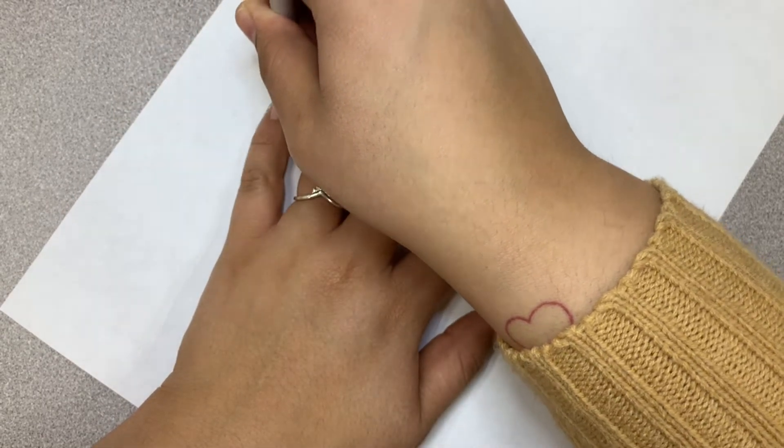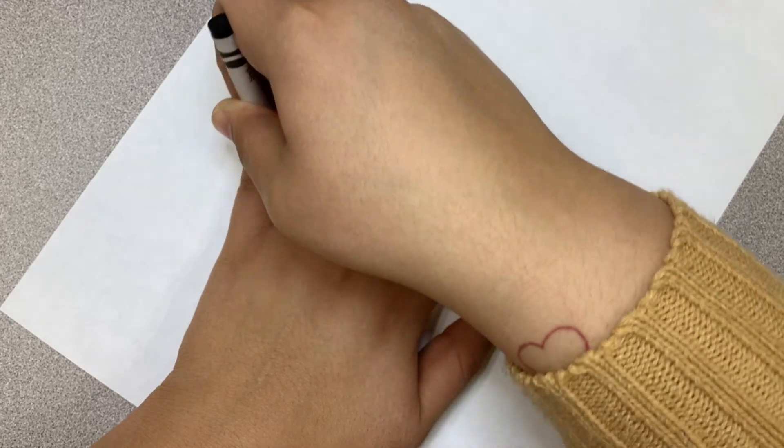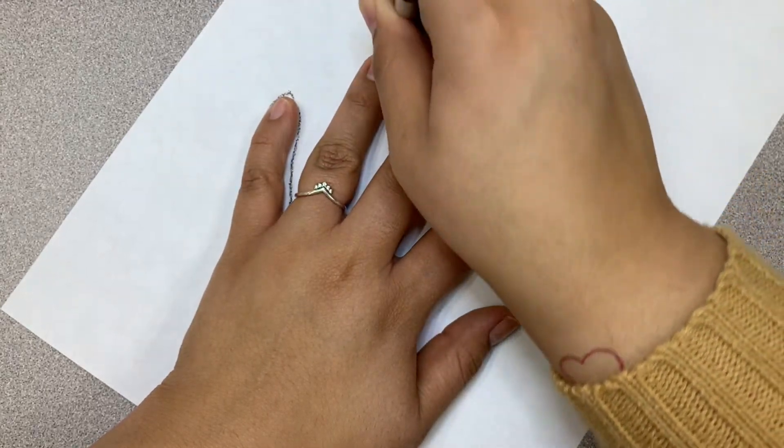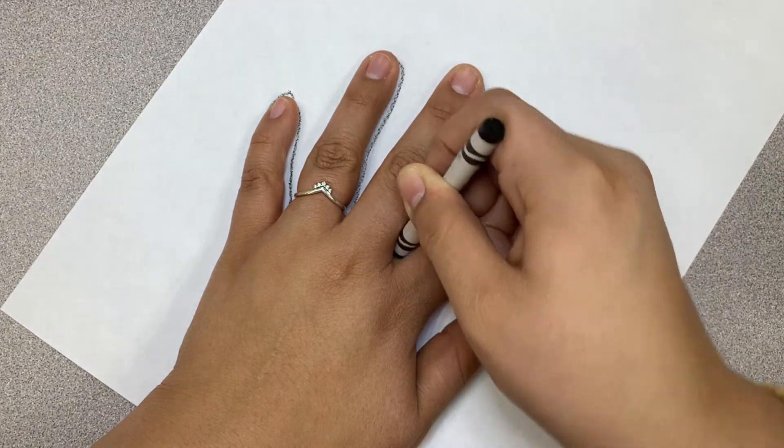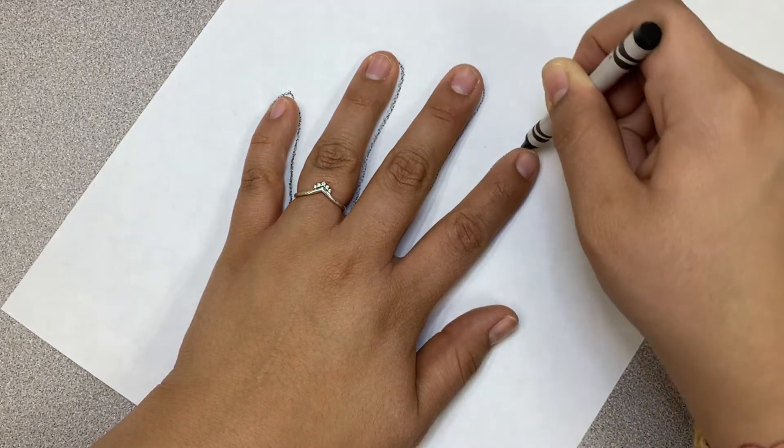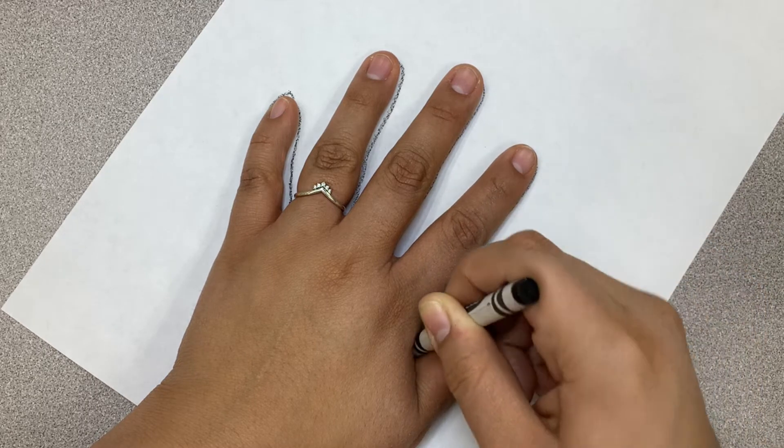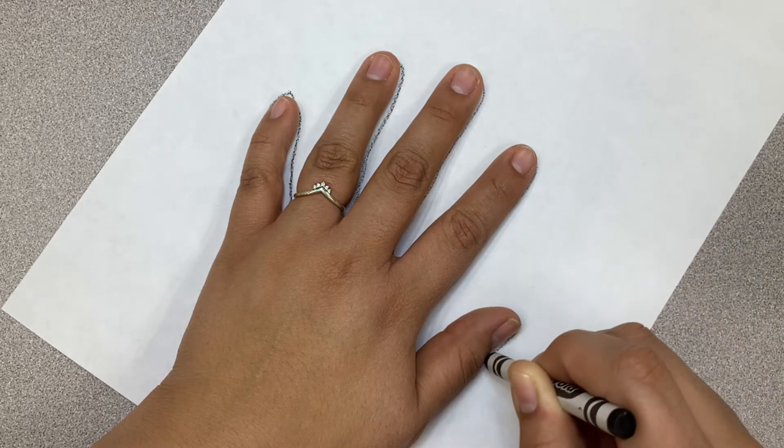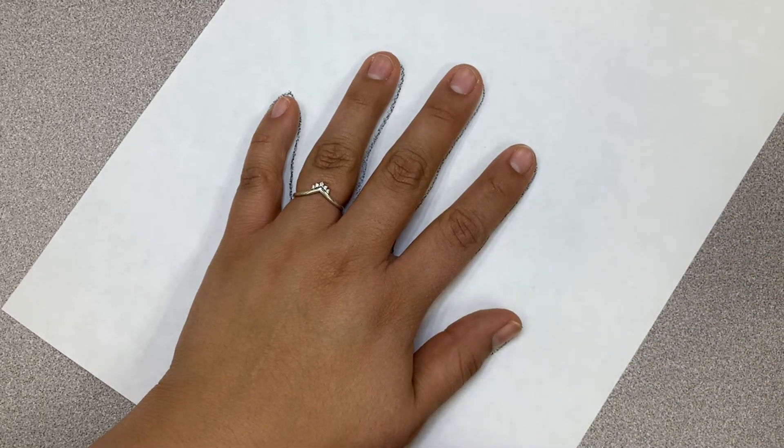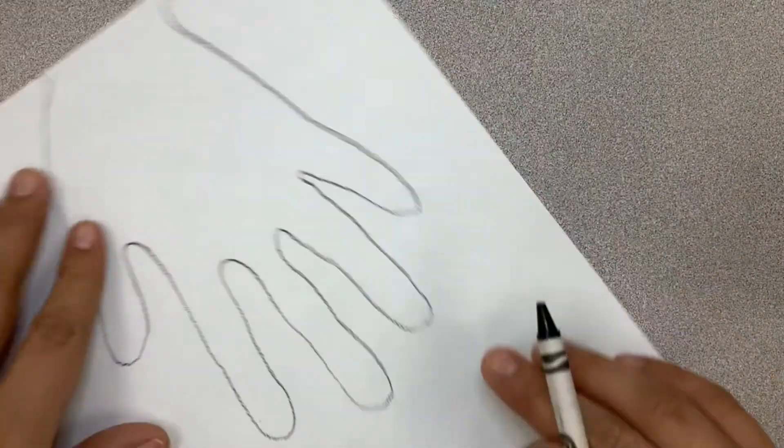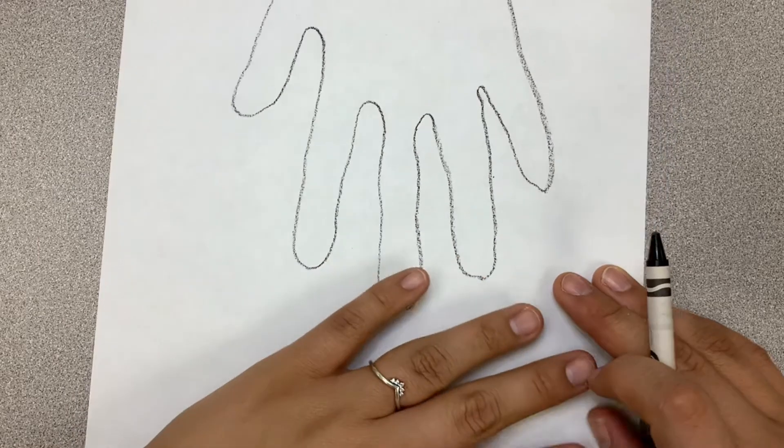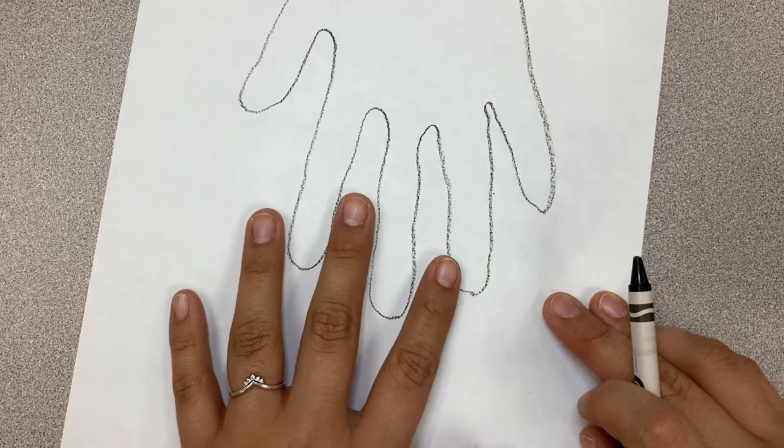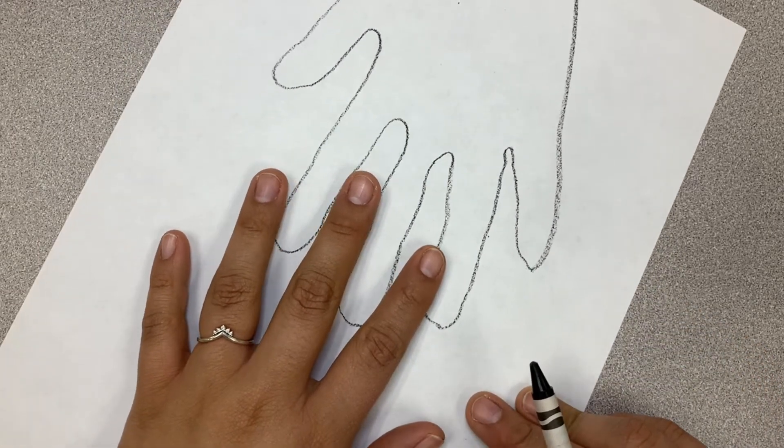So all I'm doing is taking my crayon and tracing it around my hand. And of course you can start this off with a pencil first and then trace over it with a crayon. You could do this with a marker. I don't want to do this with a marker. If you do it with the marker, trace it with the pencil first, and then you can go on to it. But don't trace your hand with the marker, trace it with the pencil first.